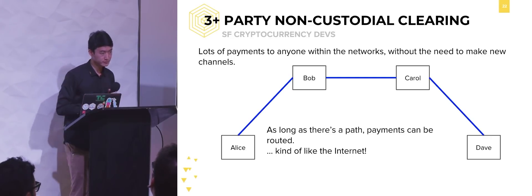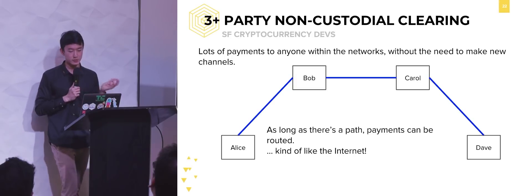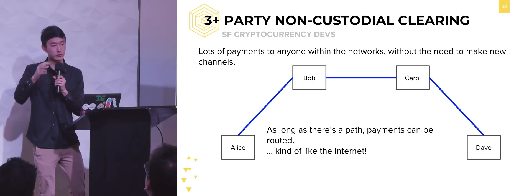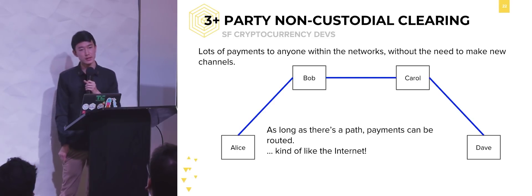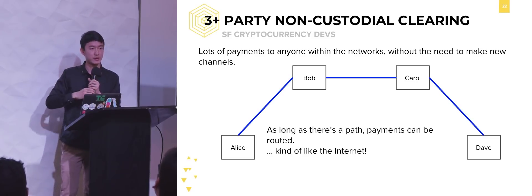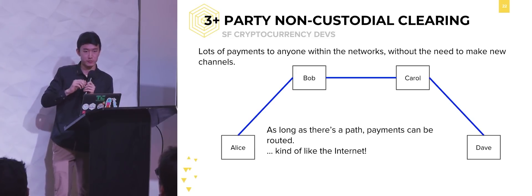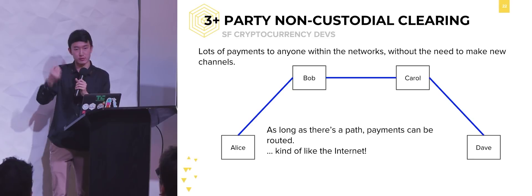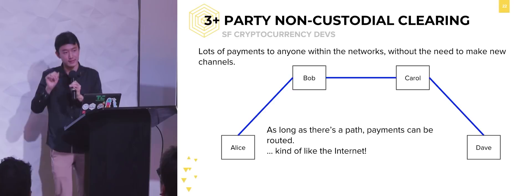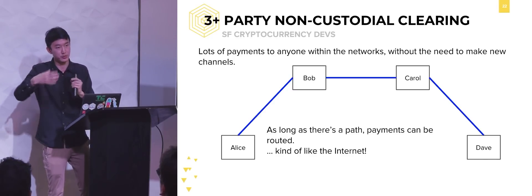Q: To compute the routing path, we need the full picture of the graph. Who maintains that? There are channel announcements — you announce 'I have this channel with this other person.' Whenever you start up your node, it queries your neighbors: 'can you tell me about the channels you know about?' They query their neighbors, and there's an algorithm for building up this picture of the graph. From that, you can do analysis. The Lightning Network has this database — and there are also more advanced routing algorithm approaches being explored.